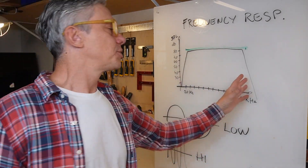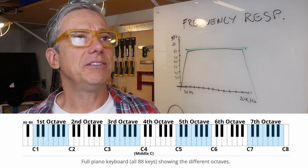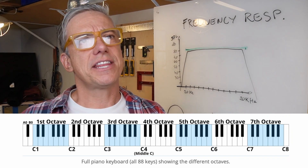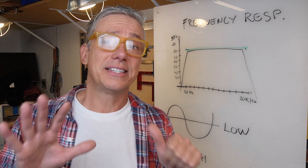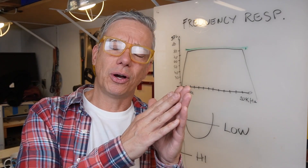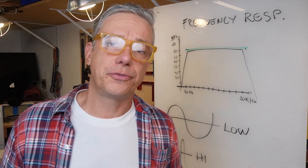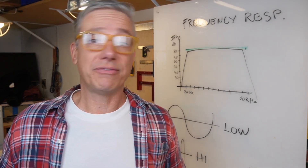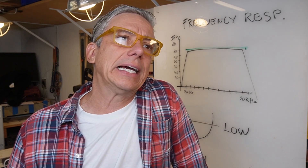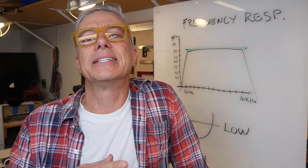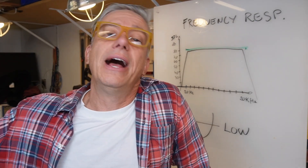Now let's talk about octaves. An octave, as the name suggests, is the eighth tone in a note scale: A, B, C, D, E, F, G — that's seven notes — and the eighth is the same note at a different frequency. In terms of frequency, the next octave is always double: if a note vibrates at 20 Hz, the next octave is 40 Hz, then 80 Hz, then 160 Hz, and so on.